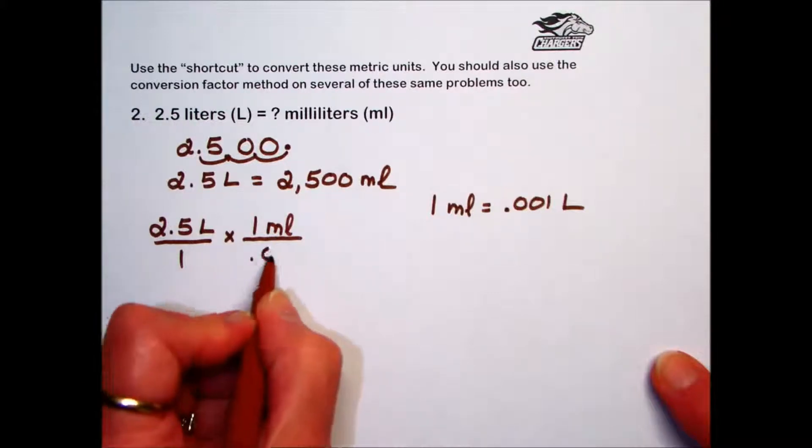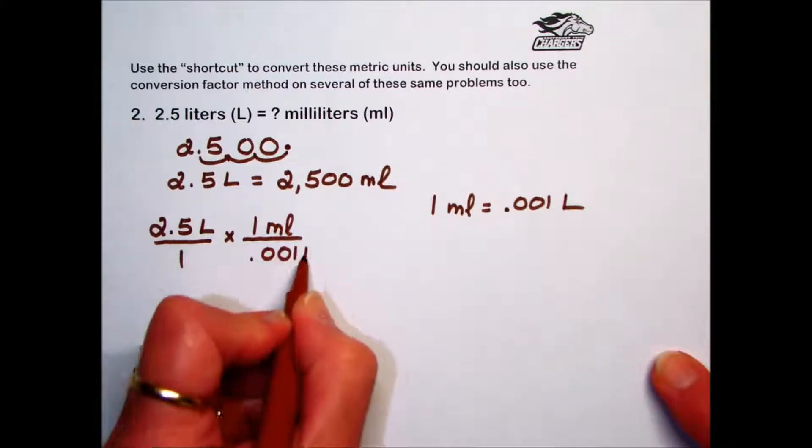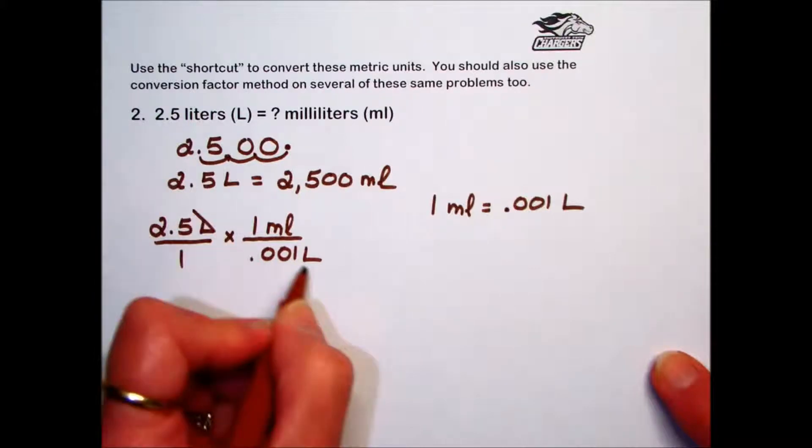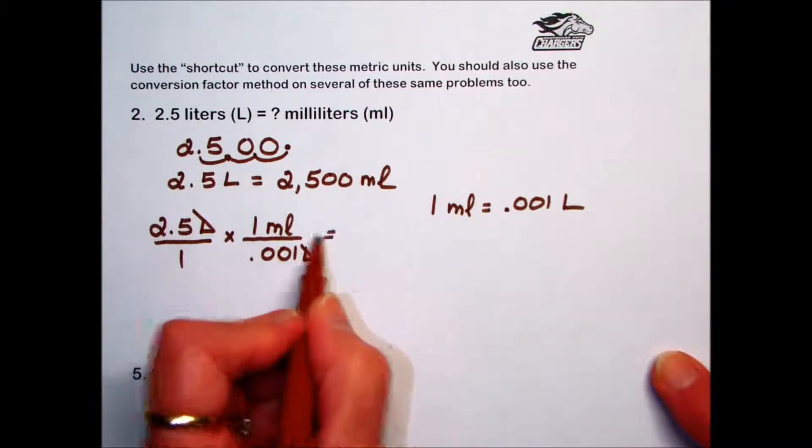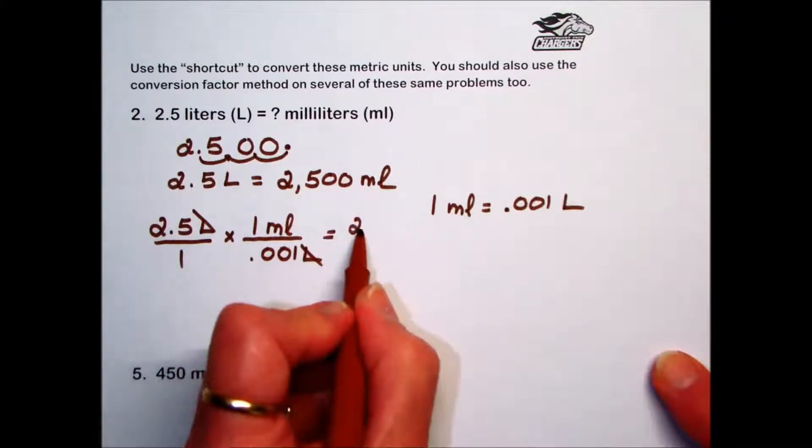The liters do cancel out. Simplifying the fraction, 2.5 times 1 is 2.5.